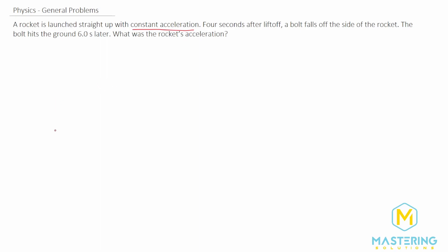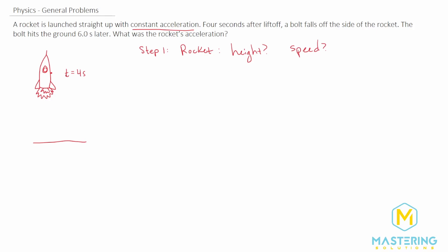Let's work it step by step. If we draw a picture, we know that the rocket is launching up into space. Then they say a bolt drops off after four seconds. So for the rocket, we only care about the rocket at time of four seconds. Step one is we need to figure out at four seconds what the rocket's height was and what its speed was. We care about the height and speed at four seconds because at that time the bolt has just barely fallen off, so it will be going at the same speed and be at the same height as the rocket. Those two values become our initial values when we start to look at the bolt.